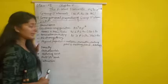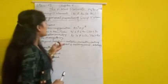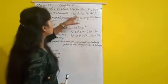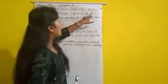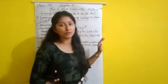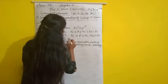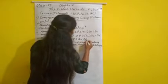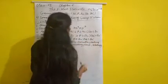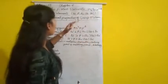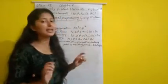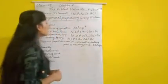Moving to electronegativity: electronegativity also decreases on going down the group. From nitrogen to bismuth, electronegativity decreases from top to bottom. Nitrogen is the most electronegative and bismuth is the least electronegative element in group 15.